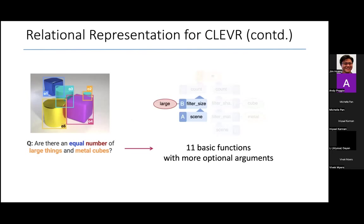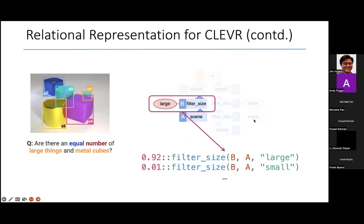In the same way for the natural language data, we have these 11 basic functions, such as scene, filter, size, count, and so on. And each of them have certain arguments like the size and the shape and the material and so on. And all of those are also probabilistic.